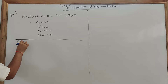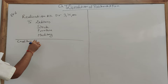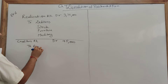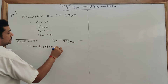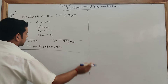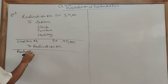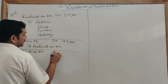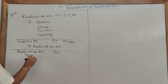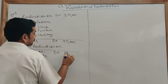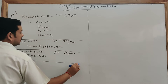Second entry: transfer liabilities to the credit side of realization — Creditors Account Dr. 45,000 to Realization Account. Being the creditors transferred to the credit side of realization. Third entry: payment of liabilities — Realization Account Dr. to Bank Account for 64,000 (creditors and outstanding bill for repairs).